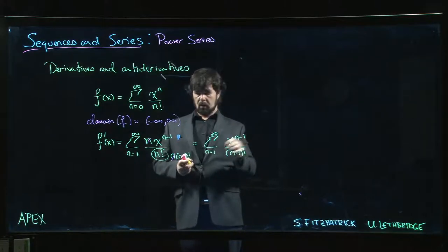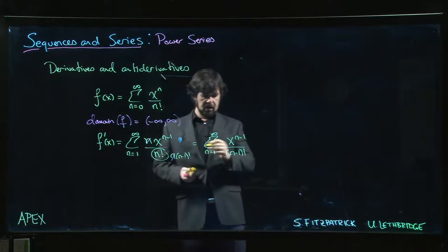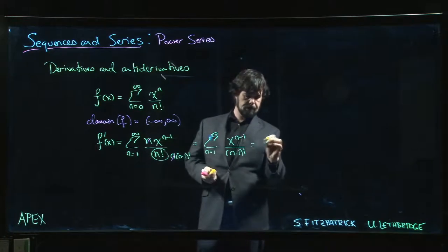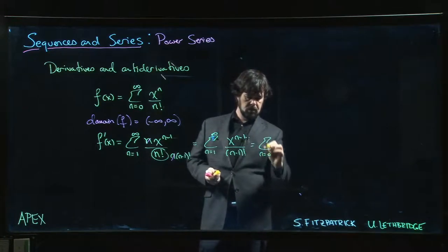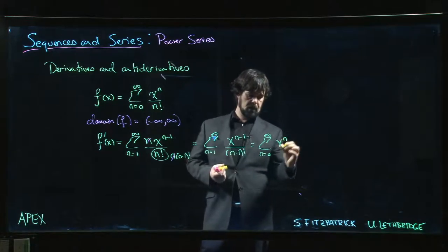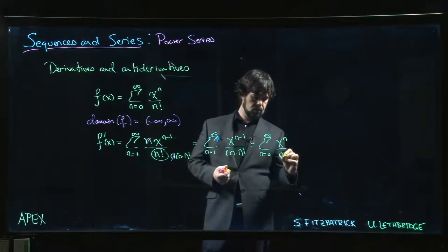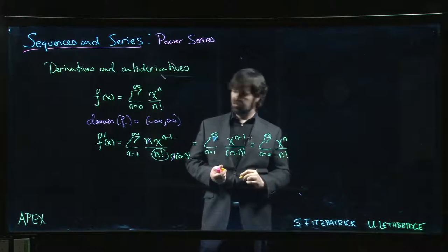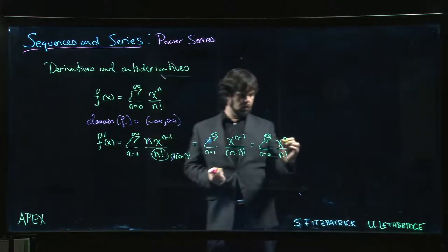If we drop the index by 1 here, we have to increase it by 1 over here. That's what we were doing in the previous video. So if we re-index, we get the sum from n=0 to infinity of x^n over n factorial.